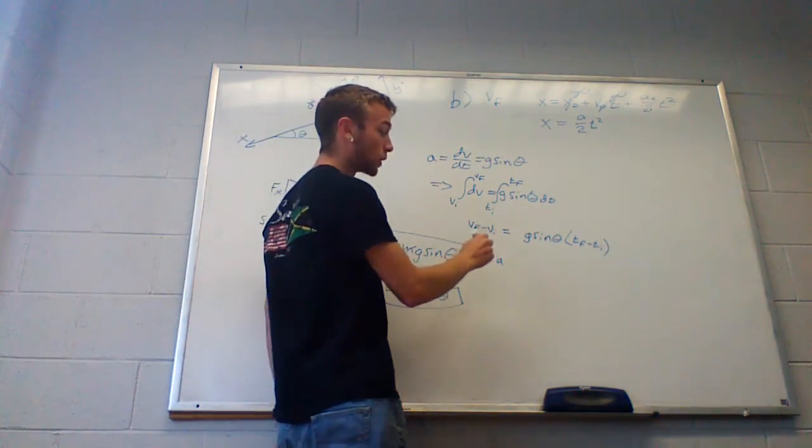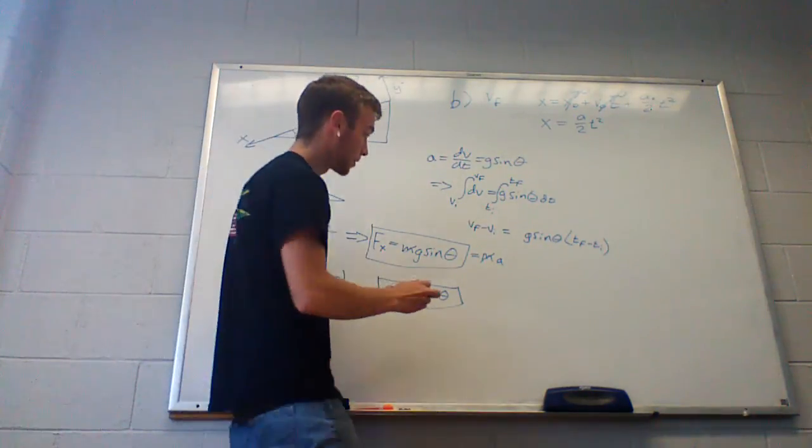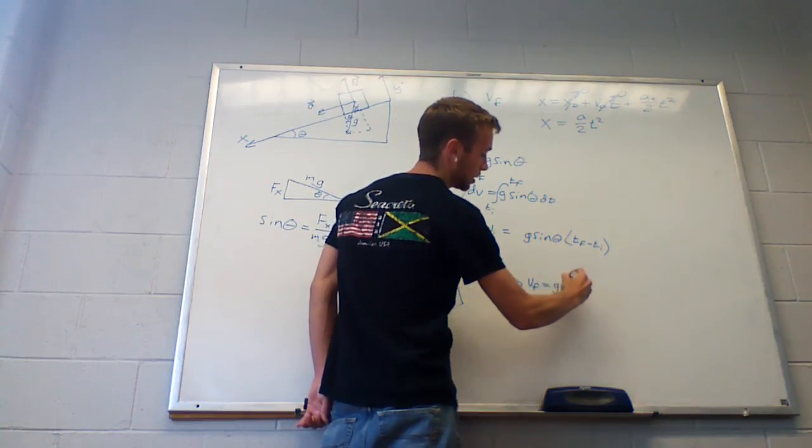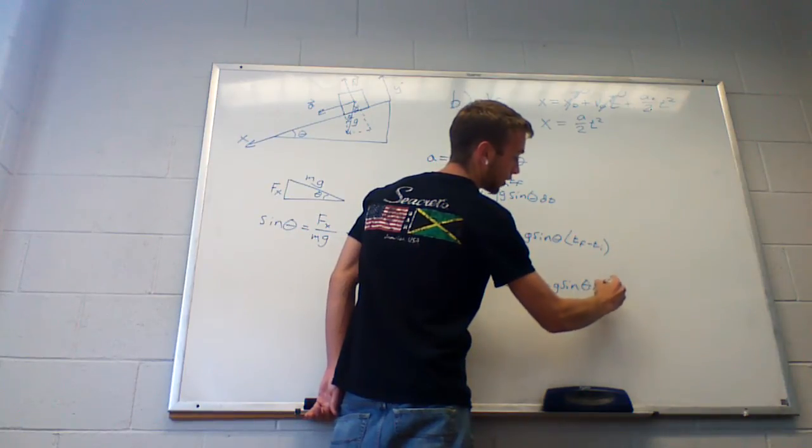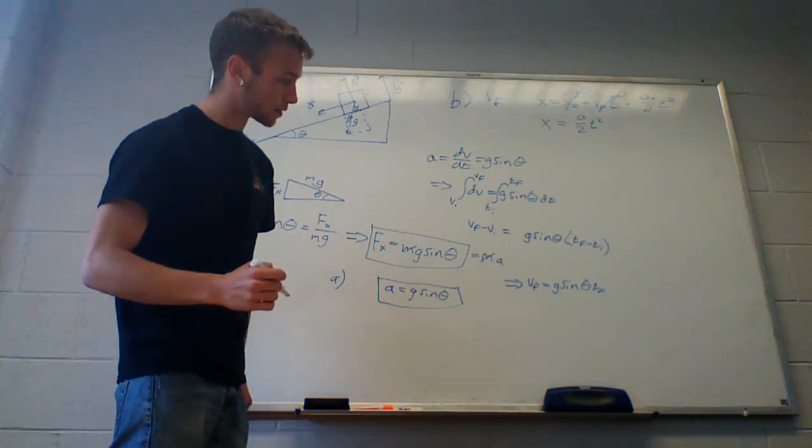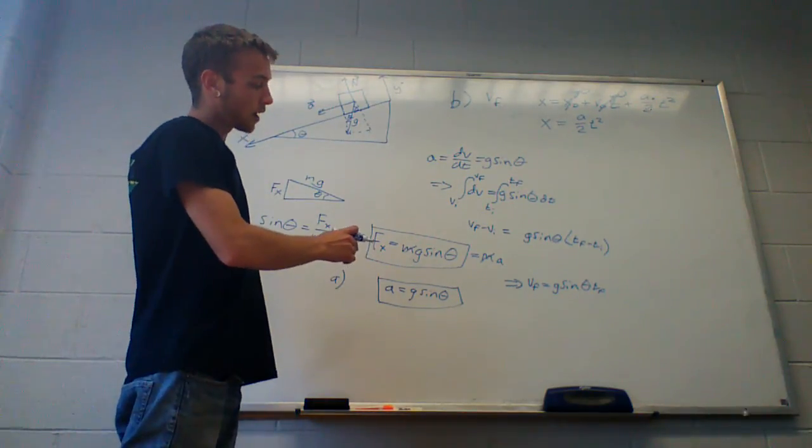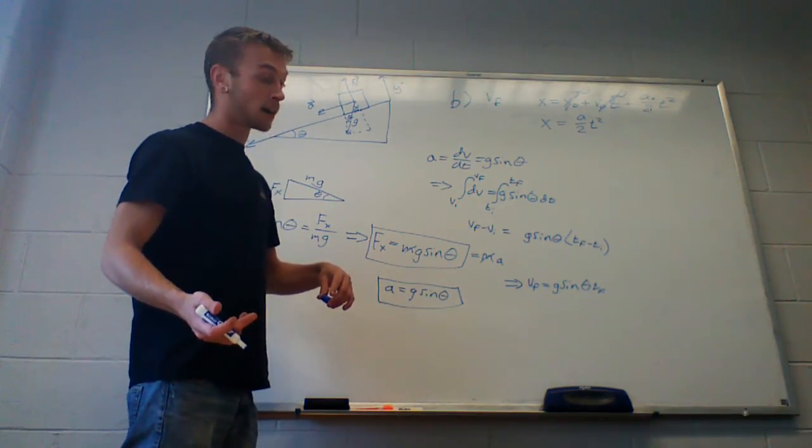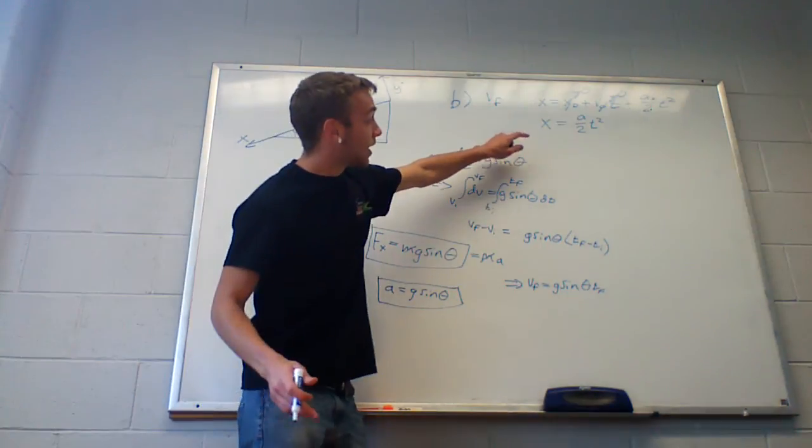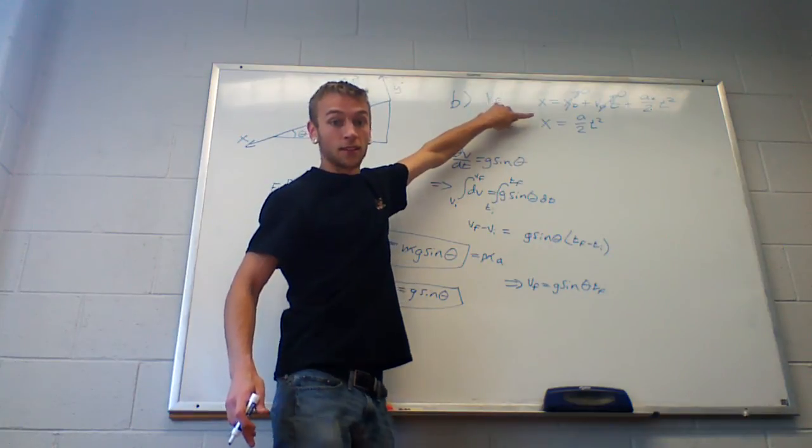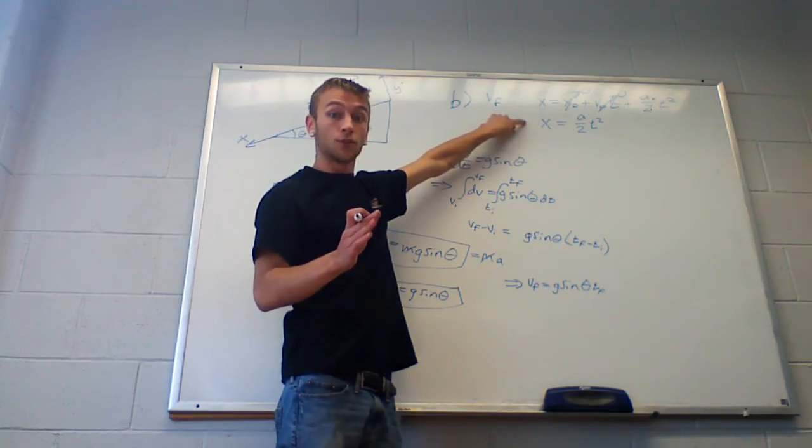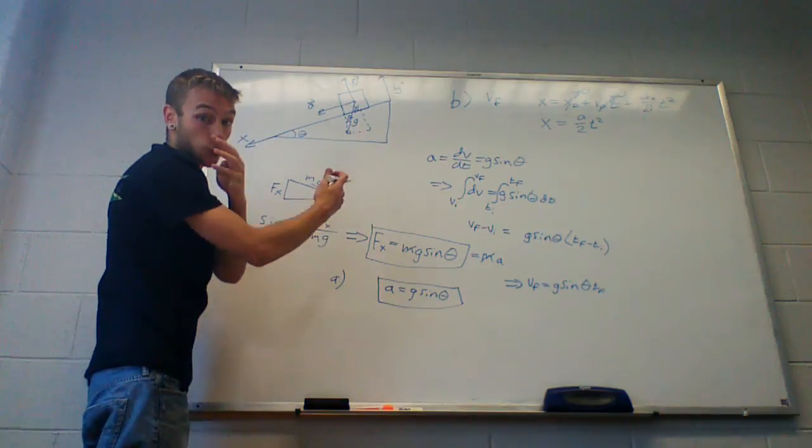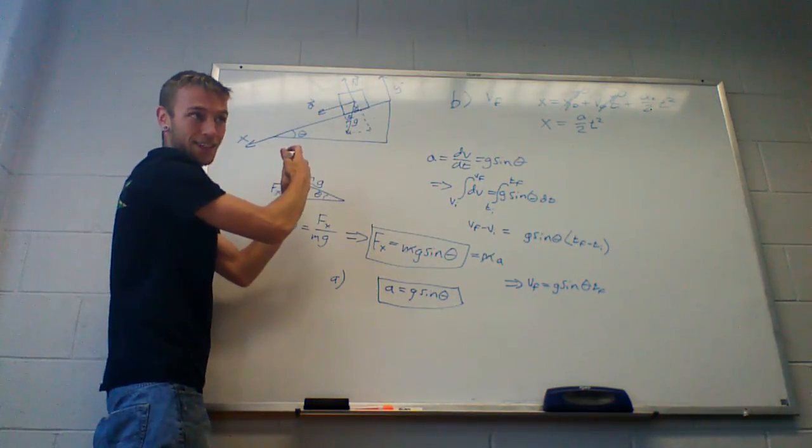Again, we went over this. We know that V initial and T initial are both zero, so we're left with V final equals G sine theta T final. And now all we have to do is find out T final. And T final is going to be equal to when X is at 2 meters, because the distance of this is 2 meters. So it needs to travel the full 2 meters to reach T final.